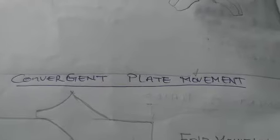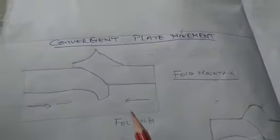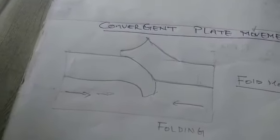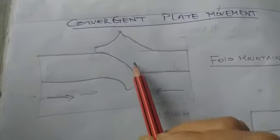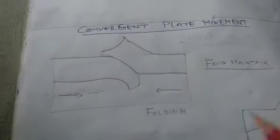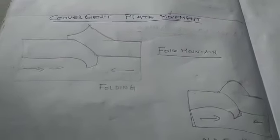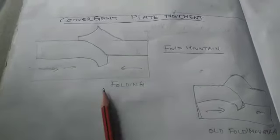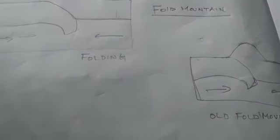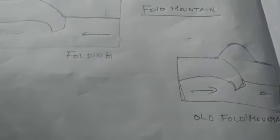Convergence plate movement: when two plates collide with each other, due to compression force the layers of the earth's crust fold. This process is also known as folding. There are two types of fold mountains — old fold mountains and young fold mountains. Old fold mountains were formed about 200 million years ago and have rounded peaks. An example of old fold mountains in India is the Aravalli Range.